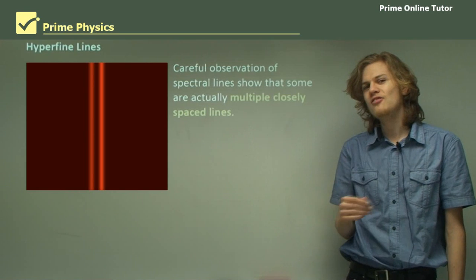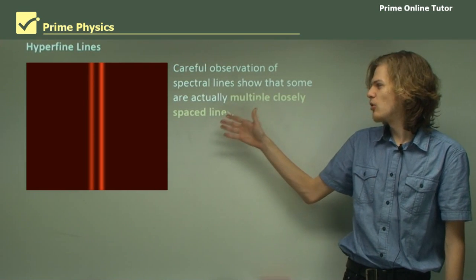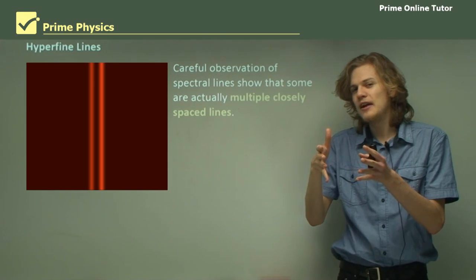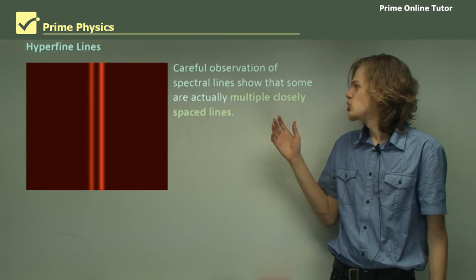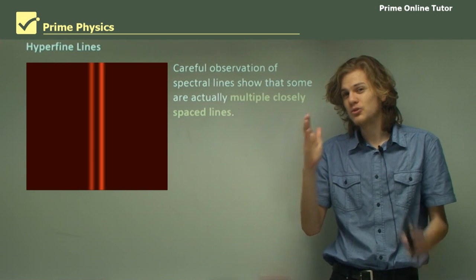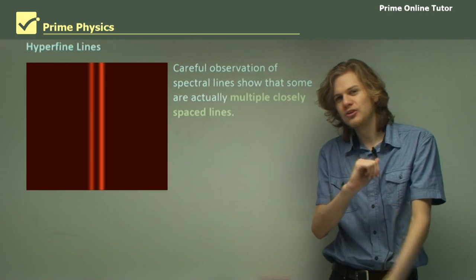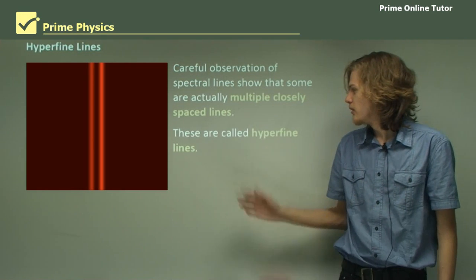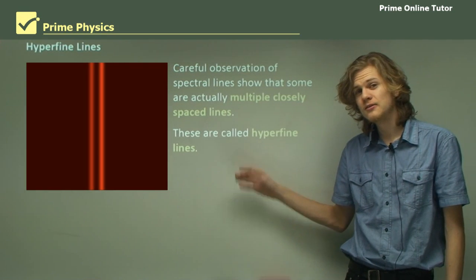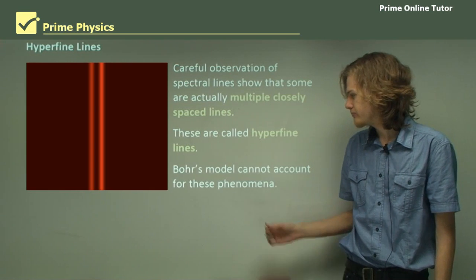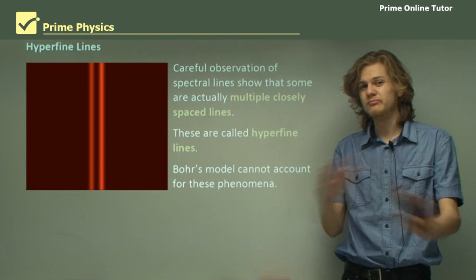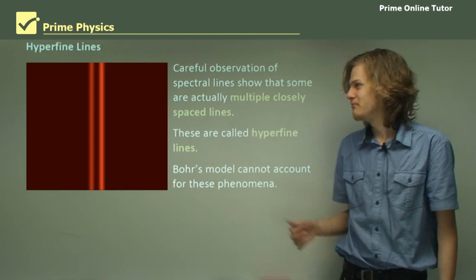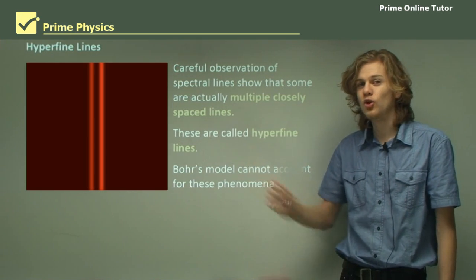So to begin with, we had this odd little thing that we call hyperfine lines. So very, very careful observation of some spectral lines show that they were actually more than one line. They were just really close together. And Bohr's model could not account for that at all. So these are called the hyperfine lines. They're found in lots of different spectra. And Bohr's model didn't have any reason for this to happen. I mean, you know the model now. There's no way that this model could explain a phenomenon like this.